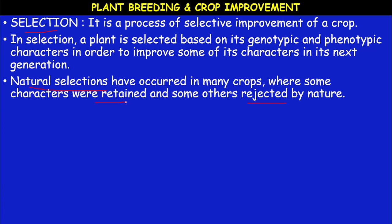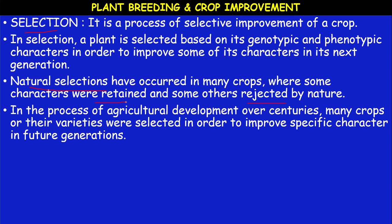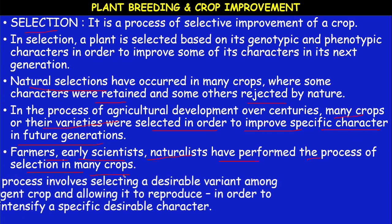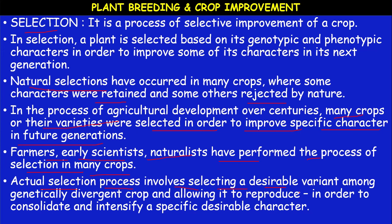That is why wild varieties of plants are well adapted to their area. Whenever newly selected varieties are introduced, some characters may be retained and others not suitable to that particular environment may be rejected. In the process of agricultural development over centuries, many crops or their varieties were selected to improve specific characters in future generations. Those specific characters are called desired characteristics. The actual selection process involves selecting a desirable variant among genetically divergent crops and allowing it to reproduce to consolidate and intensify a specific desirable character.